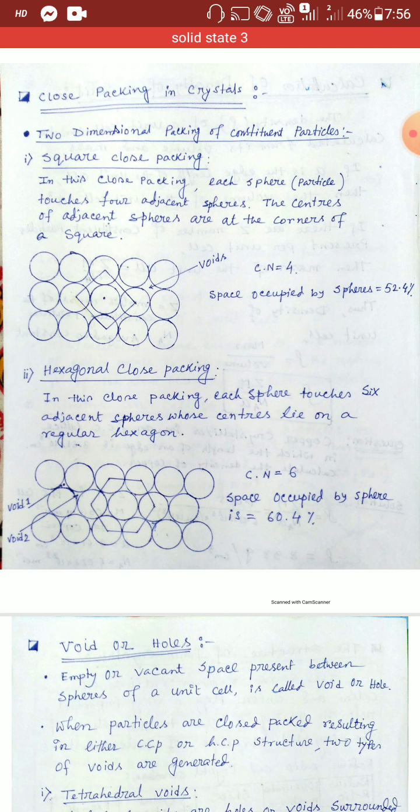In a primitive unit cell, the vacant space is 100 minus 52, which is 48%. In a face-centered unit cell, the packing fraction is 74%, so 26% is vacant space. In a body-centered unit cell, the packing fraction is 68%, so 32% is vacant space. From this calculation you understand that no unit cell is 100% closely packed — there is always some vacant space.